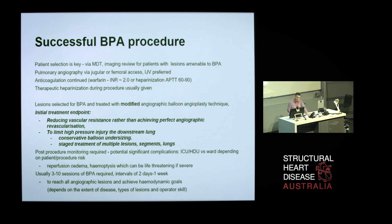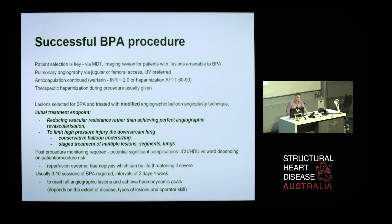The keys to a successful BPA procedure — like any other procedure — patient selection is probably the most important thing. For BPA, this usually comes via an MDT discussion, review of the appropriate imaging, and review of patients with lesions that might be amenable to BPA. Pulmonary angiography is performed, which can be via jugular or femoral access. I personally prefer the left internal jugular vein for these interventional procedures. Anticoagulation is continued and therapeutic heparinisation is also given during the procedure. Lesions are selected and treated with a modified angiographic balloon angioplasty technique.